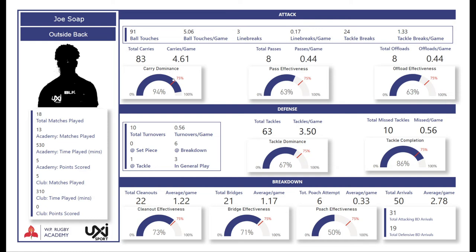We also have total carries, carries per game, total passes, passes per game, offloads, and offloads per game. Carry dominance: at the point of contact we have an imaginary line at the first point of contact, and if the ball carrier's hips end up on the other side of that imaginary line it was a dominant carry. The same principle applies to tackle dominance — does he get over the line as the carrier or as the tackler? It's very common to see higher carry dominance than tackle dominance — that's just the nature of the game.